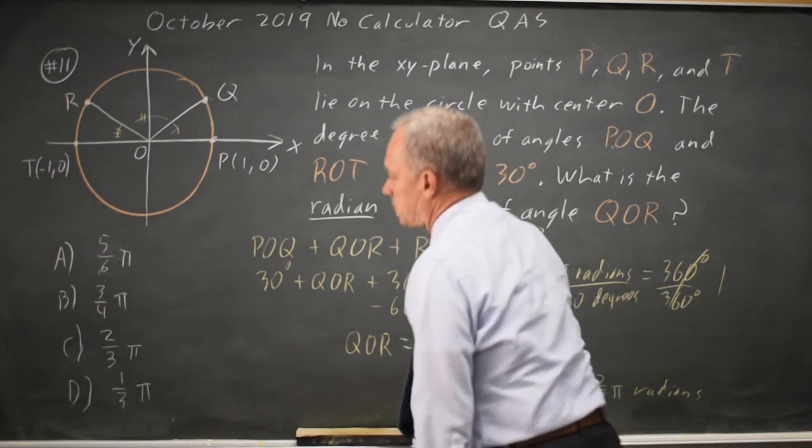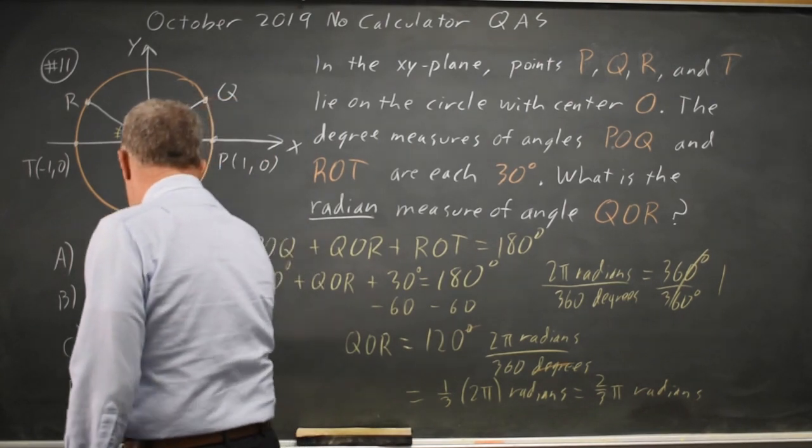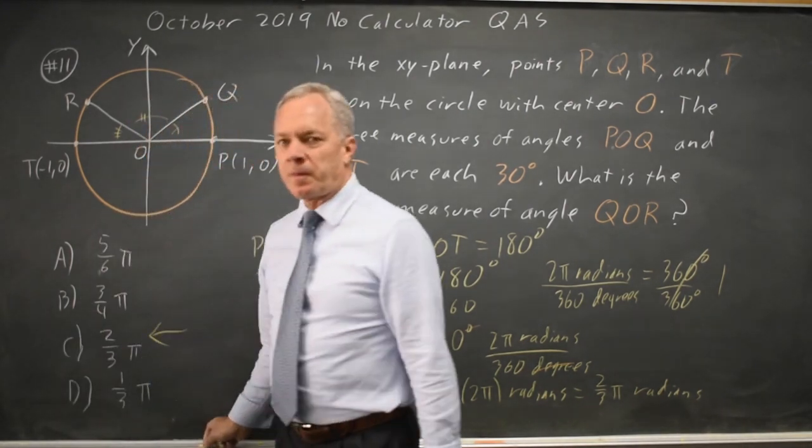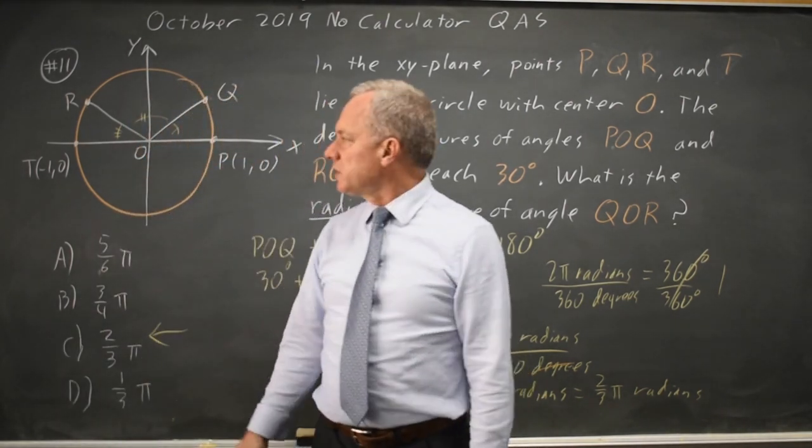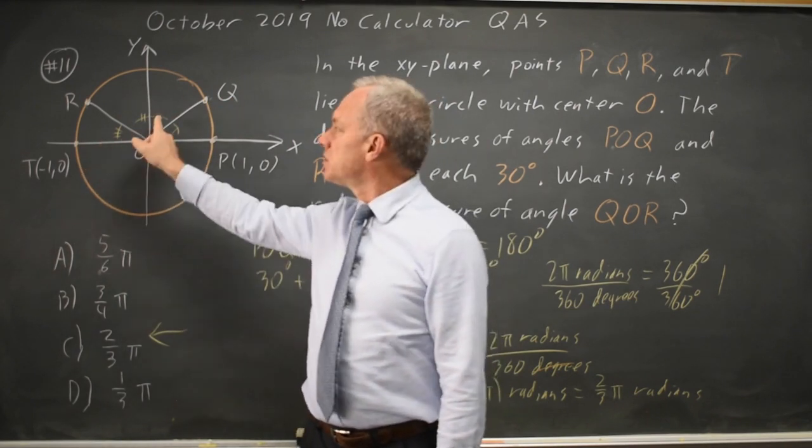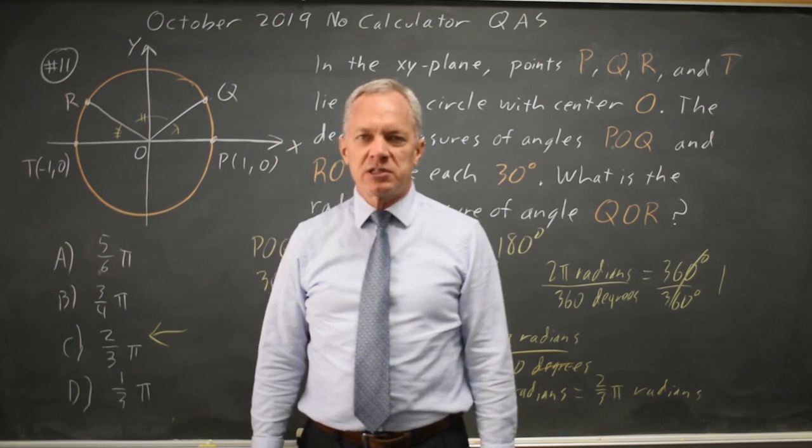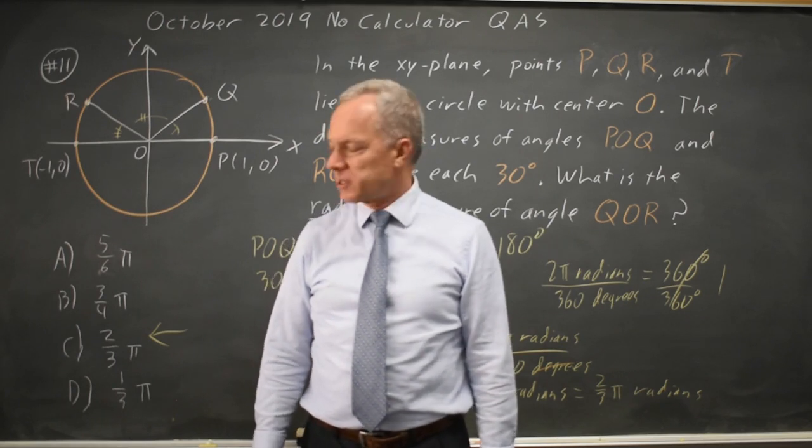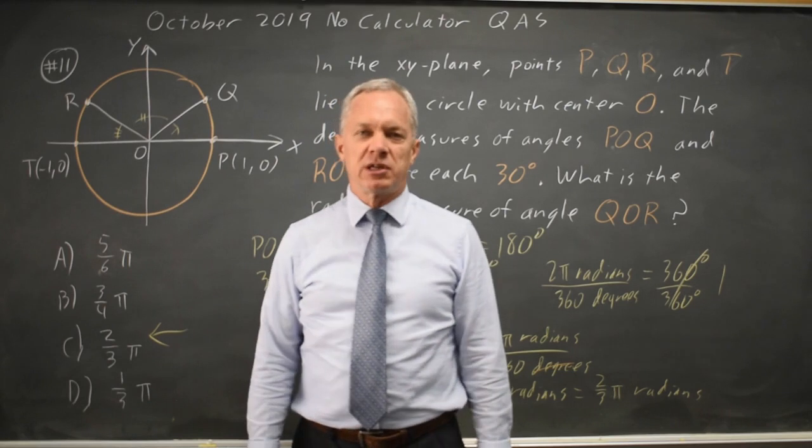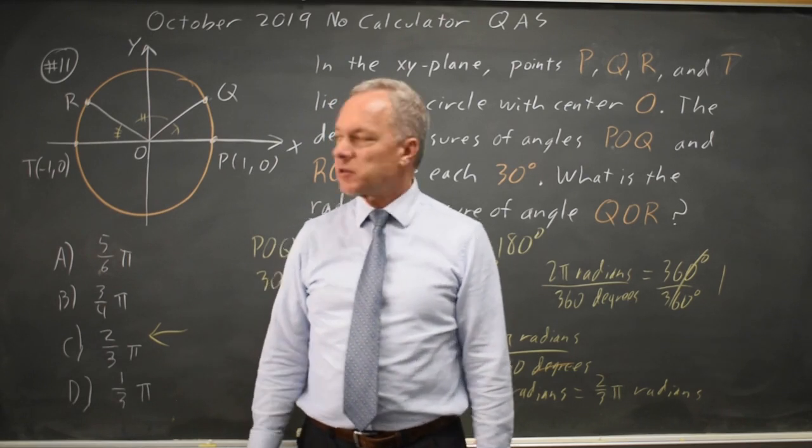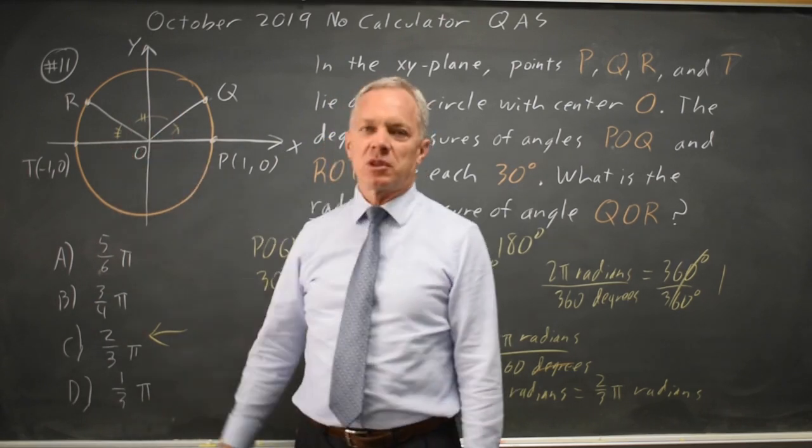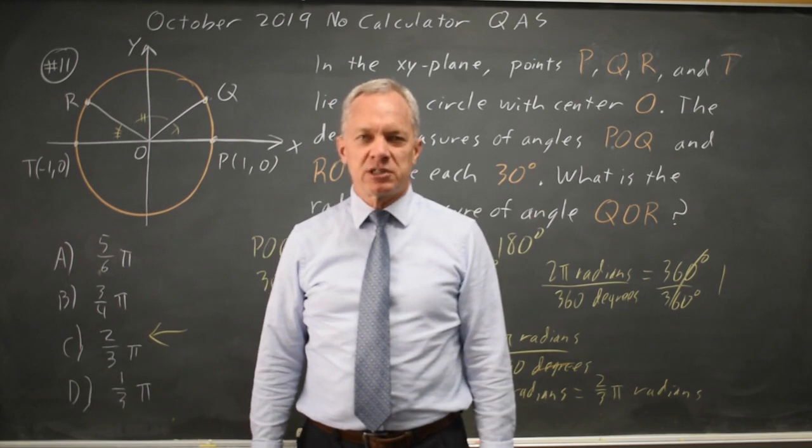And that is choice C. And visually, pi radians is 180 degrees and this does look similar to 2 thirds of pi. So estimation says that this is at least a reasonable answer where for example 1 third pi if we use the wrong conversion would not be reasonable because this is clearly more than 1 third of pi radians which is 180 degrees.